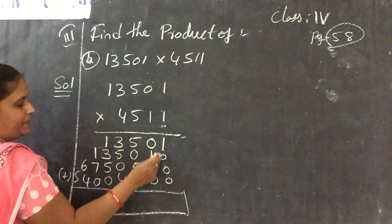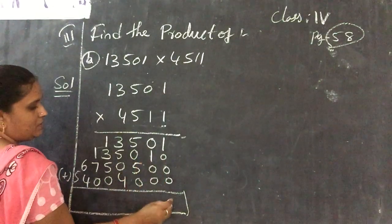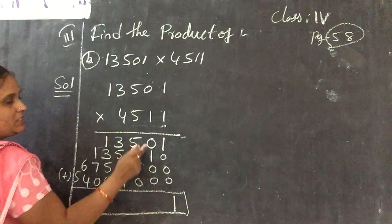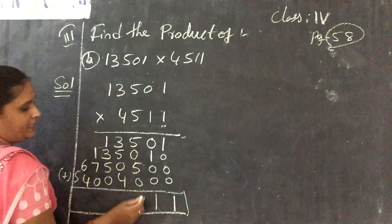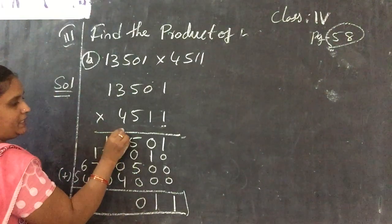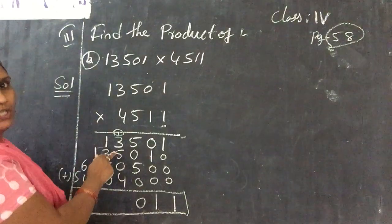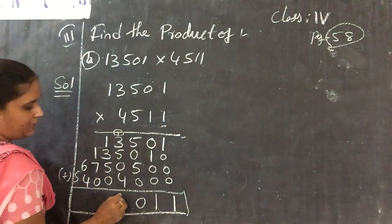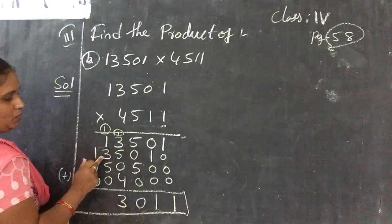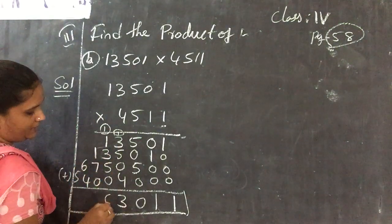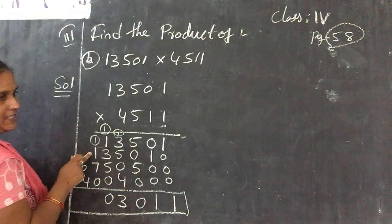Now 100 space. 5 ones are 5, 5 zeros are 0, 5 fives are 25, 2 is remainder. 5 threes are 15 plus 2 is 17, 1 is remainder. 5 ones are 5 plus 1 is 6. So 3 places we completed, put 3 zeros. Now 4 ones are 4, 4 zeros are 0, 4 fives are 20, 2 is remainder. 4 threes are 12 plus 2 is equal to 14, 1 is remainder. 4 ones, 4 plus 1 is equal to 5.